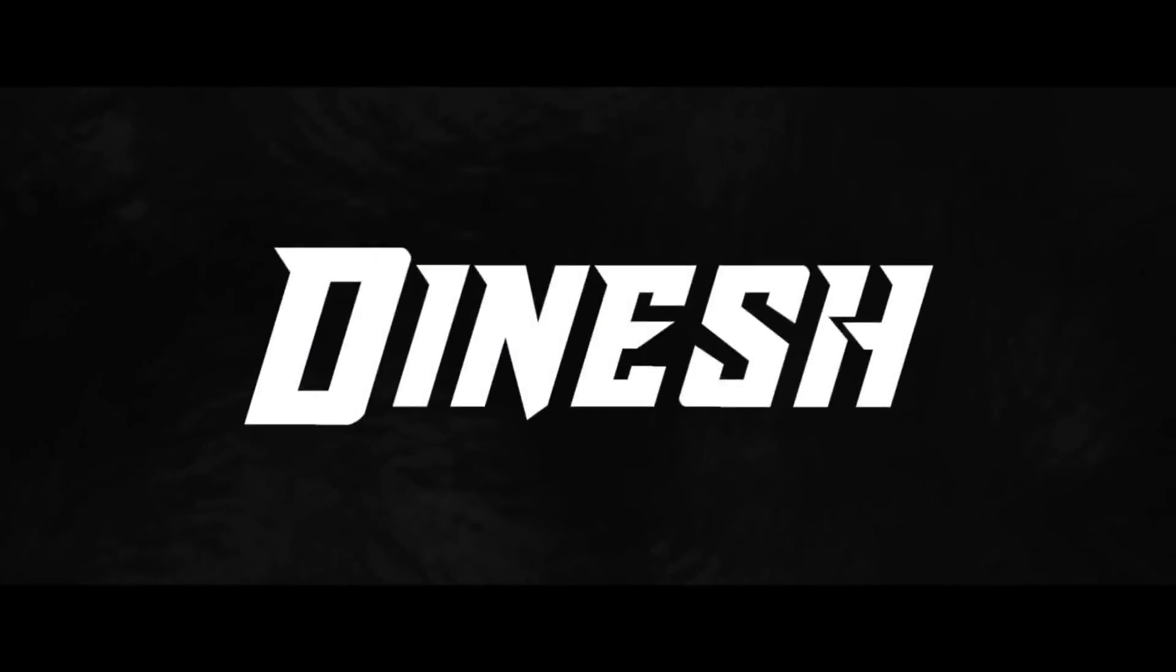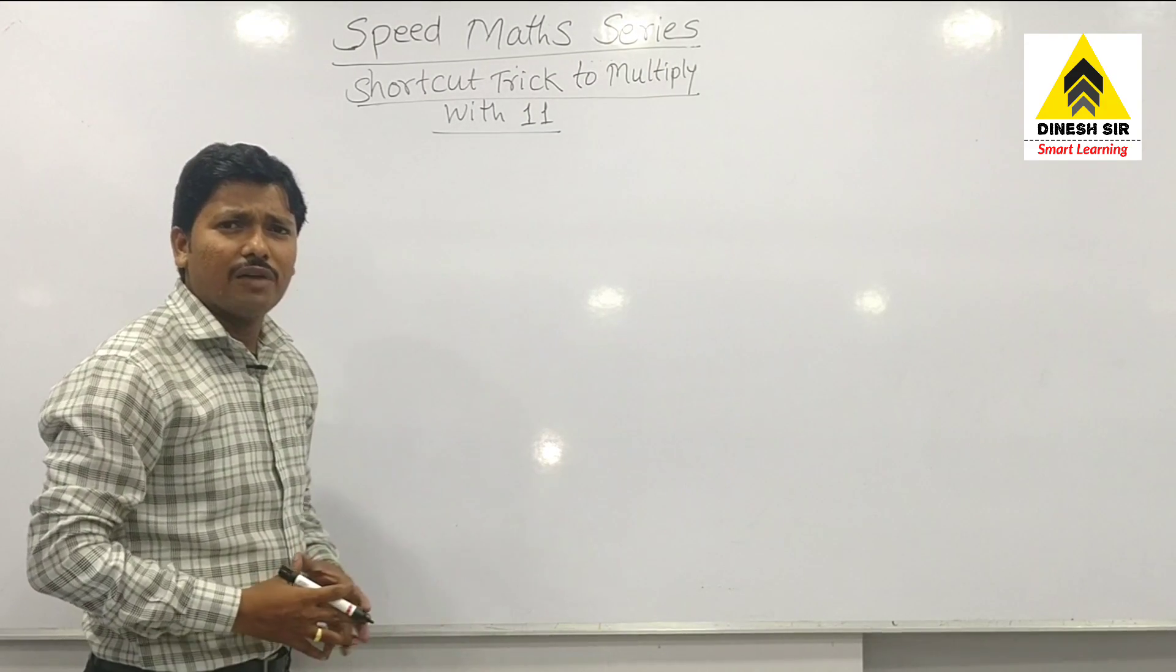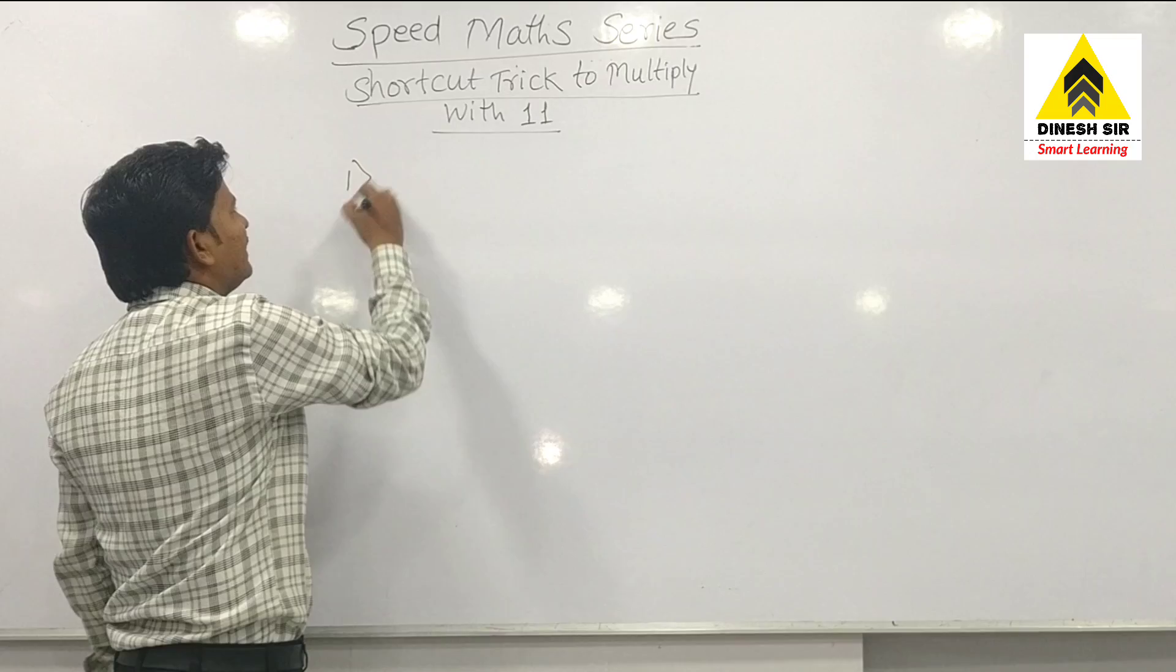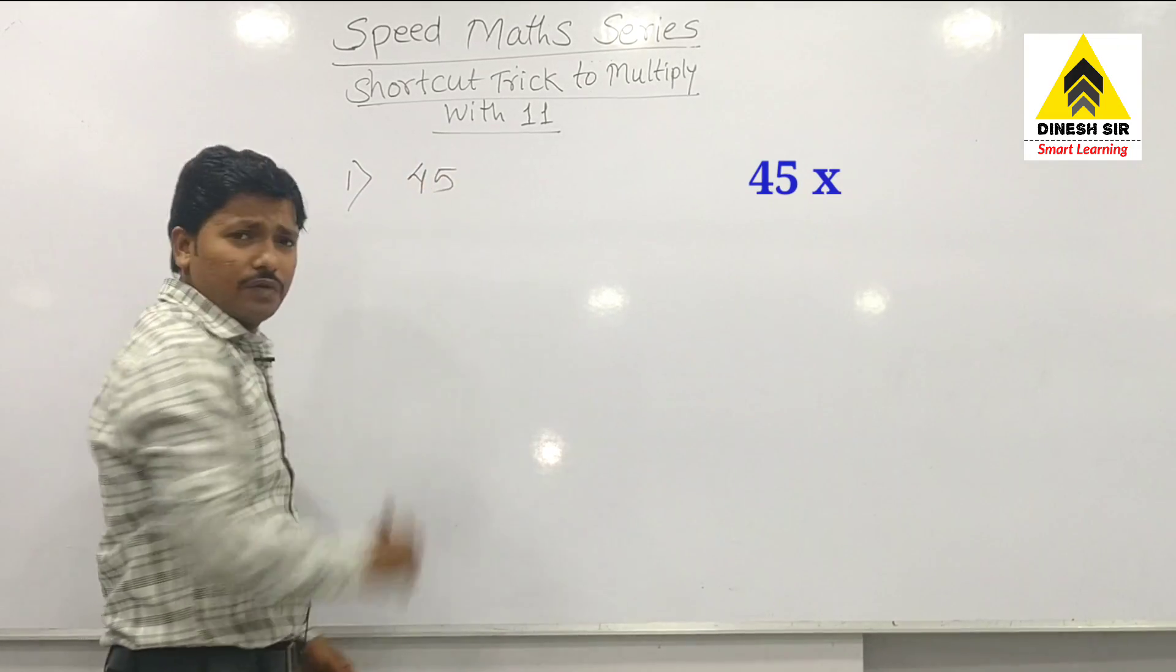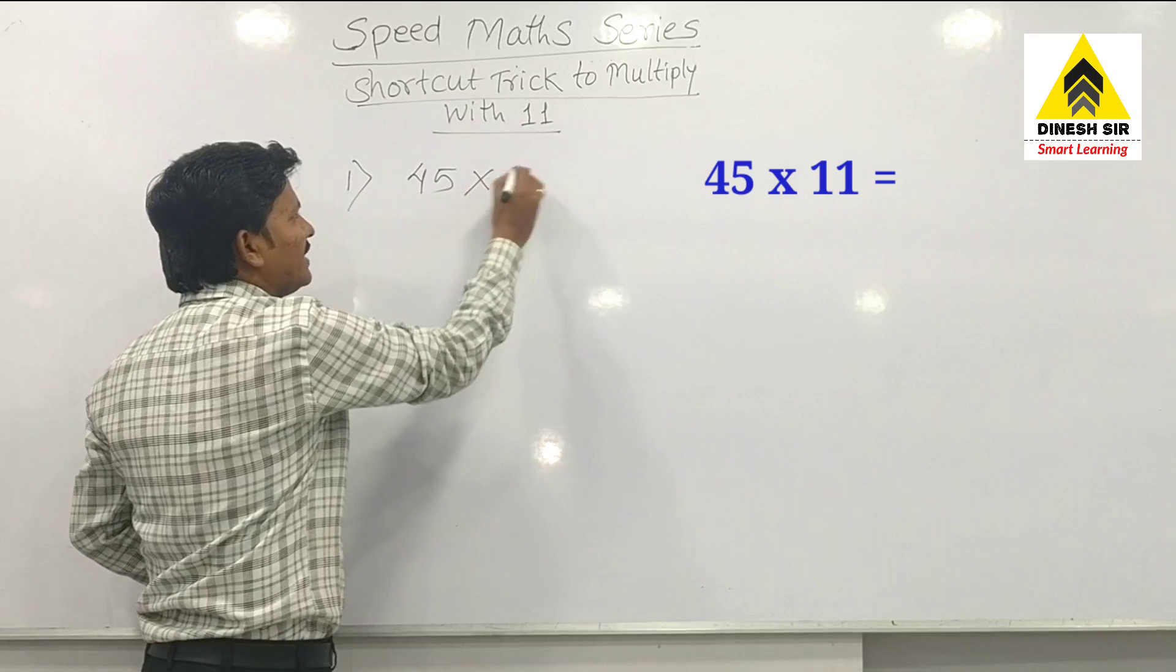Friends, if I have a number like this, 45, and I want to multiply this with 11, then what is the shortcut trick for the same?